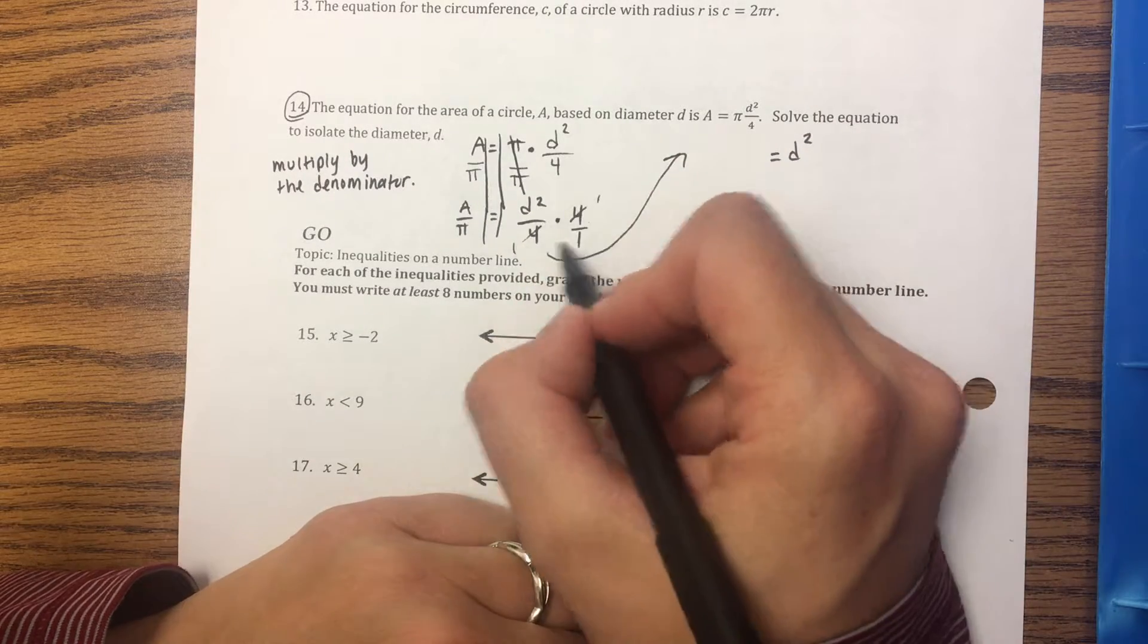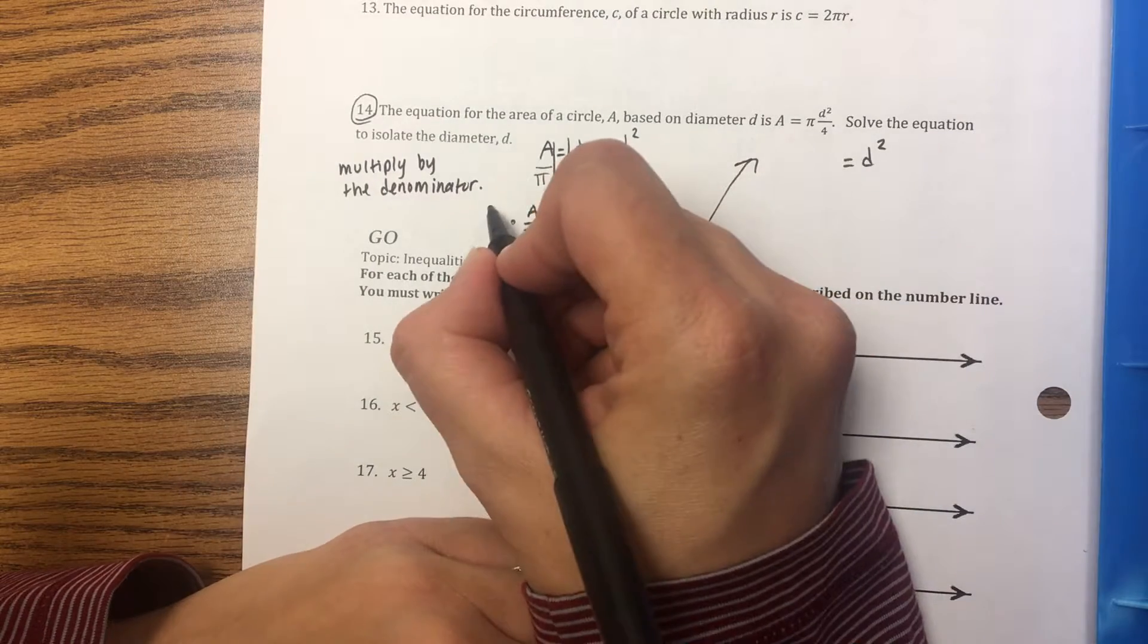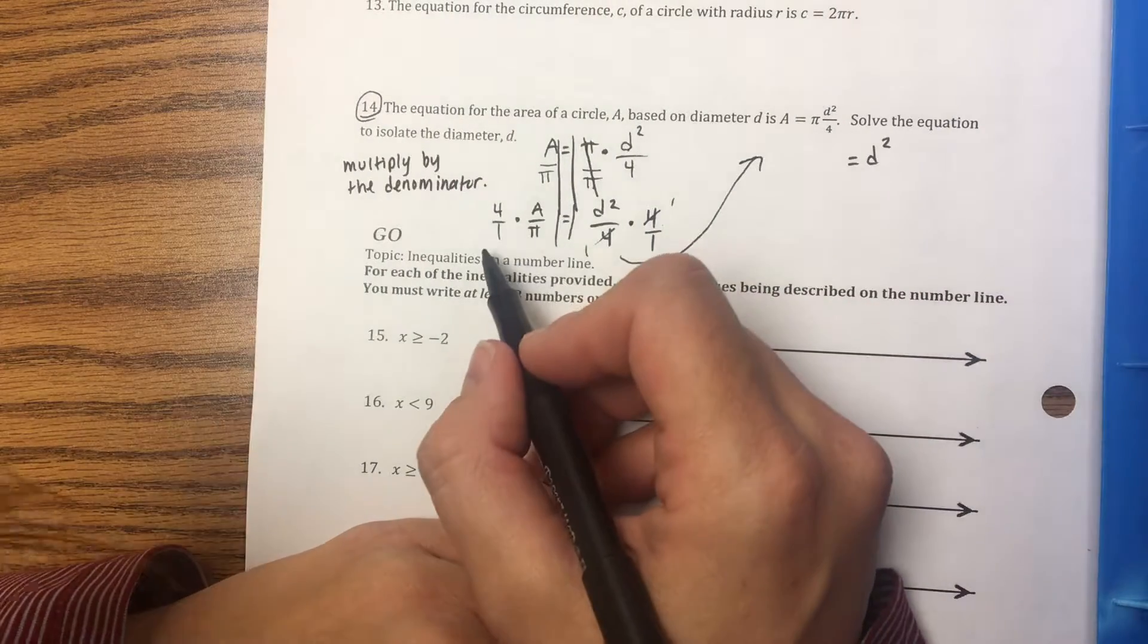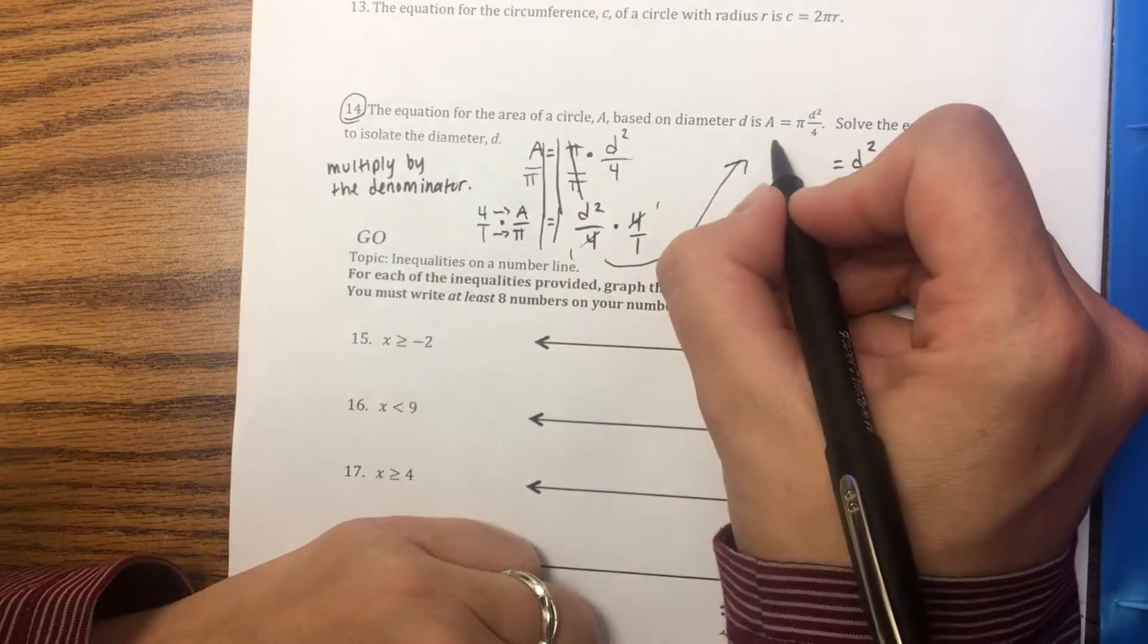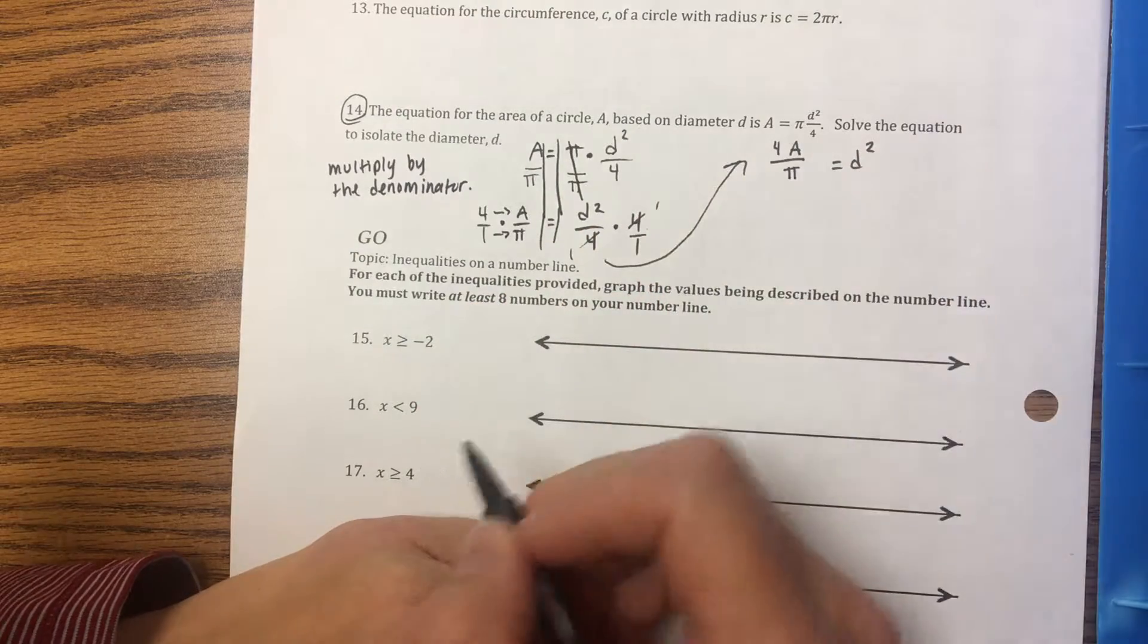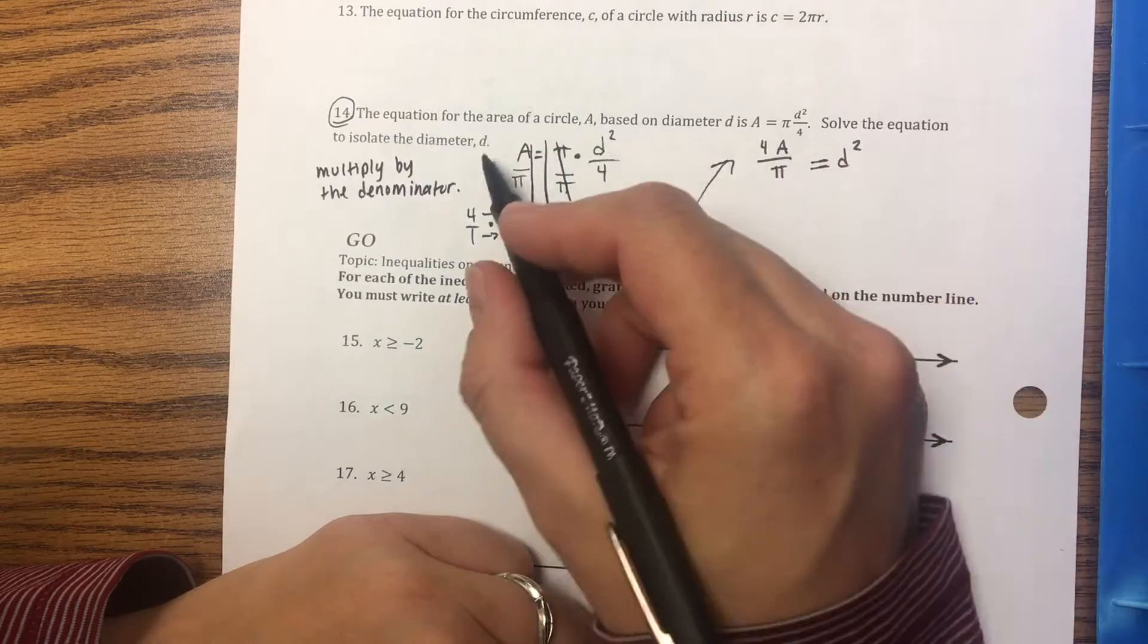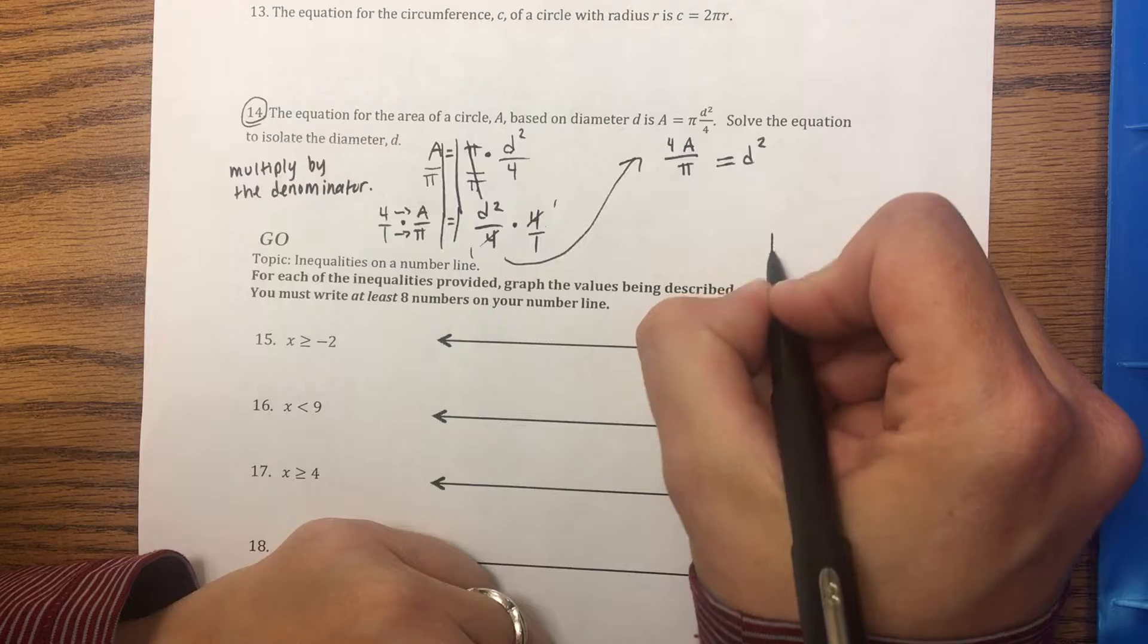But what you do to one side of the equation you have to do to the other. So I also need to multiply 4 over 1 here, and then you multiply straight across. So you're left with 4 times a divided by 1 times pi, which is just pi.